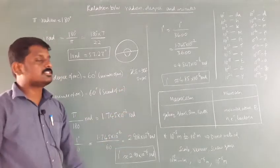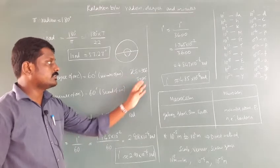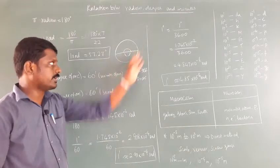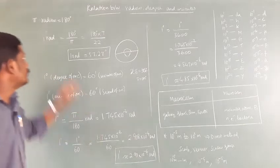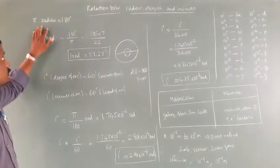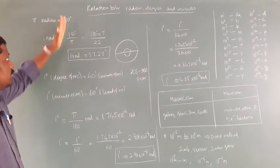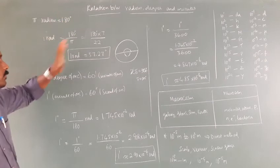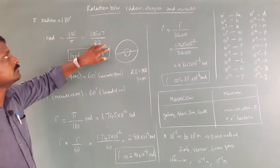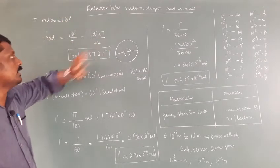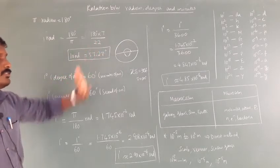So 2π radians is equal to 360 degrees, and π radians is equal to 180 degrees. So 2π is a complete circle, and a half circle is π radians. So 1 radian is equal to 180 degrees divided by π. Since π is equal to 22 by 7, you will get 1 radian equal to 57.27 degrees.